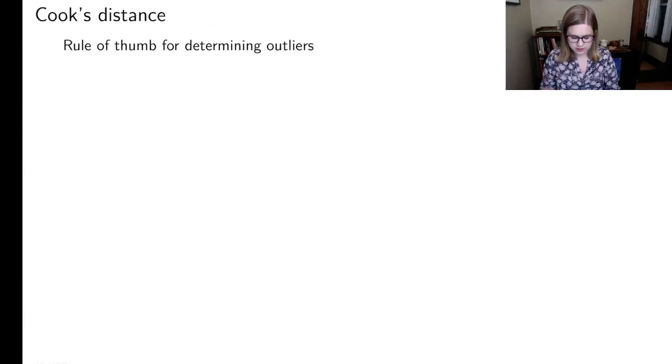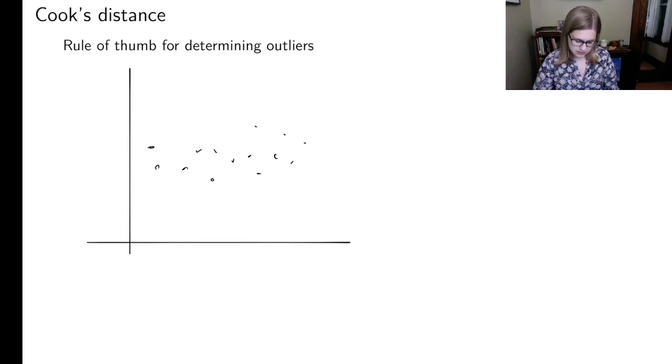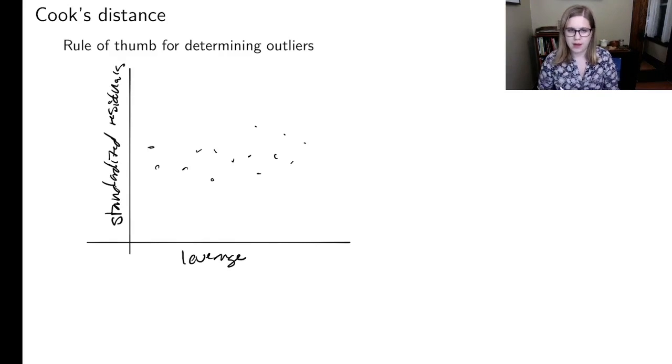I'd also like to talk about Cook's distance. This is kind of a rule of thumb or a heuristic for determining if something is an outlier. And one of the residual plots that we haven't talked about yet is going to show you Cook's distance. So here's how the plot is going to look. It's going to have some data points in the plot. And the axes are standardized residuals versus the leverage. And so you're going to have your residuals all plotted on this picture. And then there are going to be these dotted red lines. So maybe something like this. And the one that's closer to your data is going to be labeled 0.5. And then the one that's further away is going to be labeled 1.